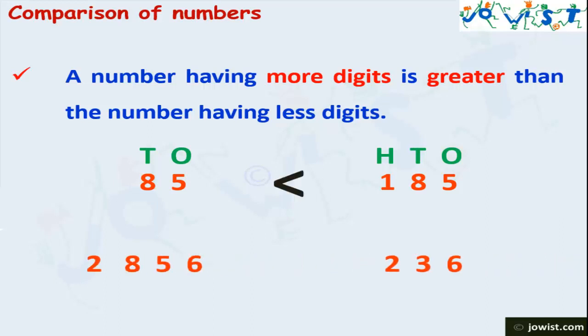Similarly, between 2856 and 236, 2856 has four digits: six ones, five tens, eight hundreds, and two thousands. Whereas 236 has three digits: six ones, three tens, and two hundreds. So, 2856 is greater than 236.